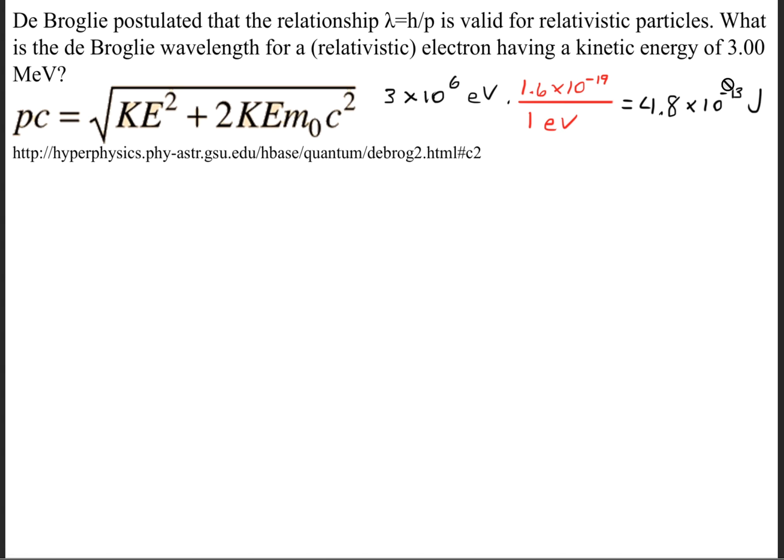we're going to first convert this mega electron volt into joules. So first thing we'll do is we'll convert this into standard units of electron volts, so that's 3 times 10 to the 6 electron volts. And the conversion factor is for every 1 electron volt we have 1.6 times 10 to the negative 19th joules. So when we convert that we'll get 4.8 times 10 to the negative 13th joules. And this is going to be our kinetic energy right here.